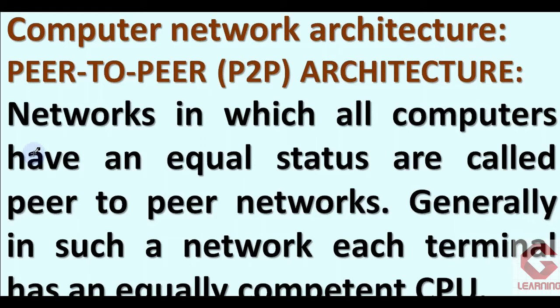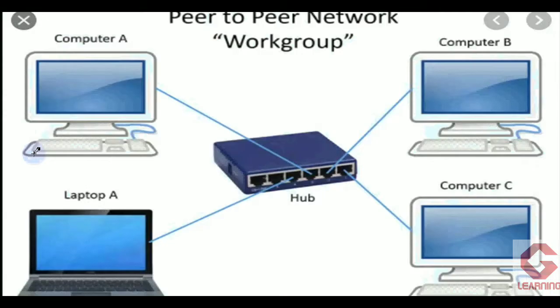Their storage capacity is also the same, so all computers have equally capable CPUs. Peer-to-peer architecture is used when data sharing is only the objective, or if we want to transfer data from one device to another. As you can see in this picture, all the computers are connected to one hub. Because of this, all computers can easily exchange data with each other. If computer A wants to send data to computer C, the data is transferred from A to hub and then hub to C.